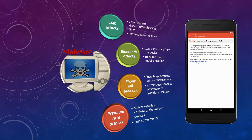With jailbreaking, an attacker can remove the security protections of the operating system, allowing installation of applications without additional signatures. The premium rate service can deliver valuable content to mobile devices. When used in a legitimate way, users can receive financial information, technical support, or adult services. These services cost a small amount of money per message or minute.